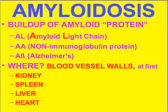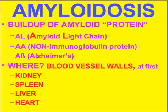AL amyloid results from chronic buildup of light chains, for example in multiple myeloma or chronic granulomatous diseases — that's why these two kinds of diseases show an extremely high association with amyloidosis. Another type of amyloid protein is AA, which is not fully an immune protein but is still considered amyloidosis.